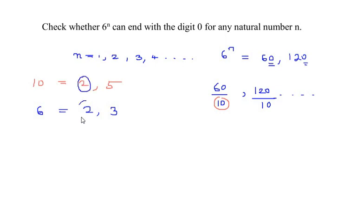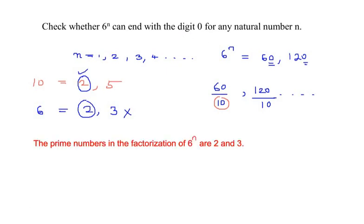Let us compare now. Looking at it, 2 is common from 10 and 6—this matches—but 5 is there in 10, but the prime factor of 5 is absent from the number 6. That means 6 to the power of n will not end up with the digit 0.